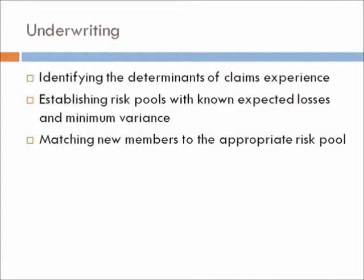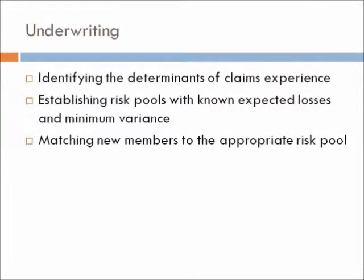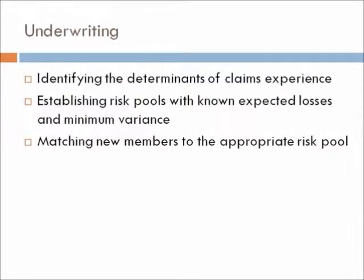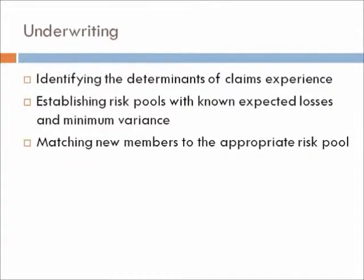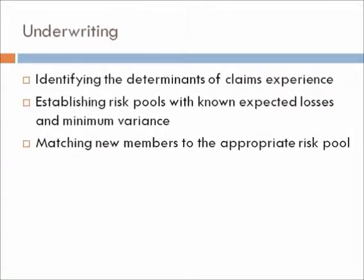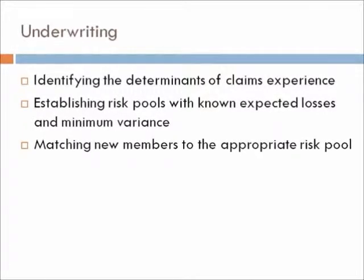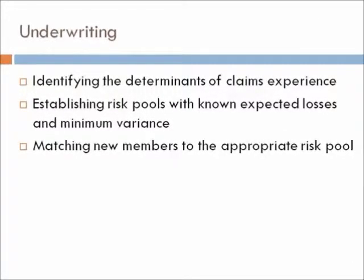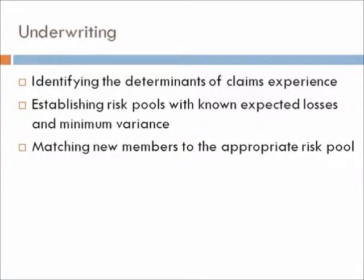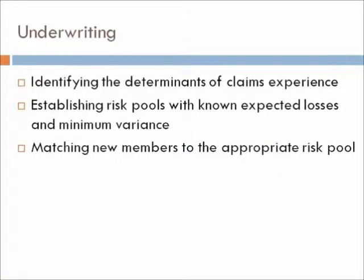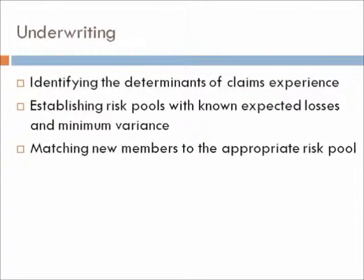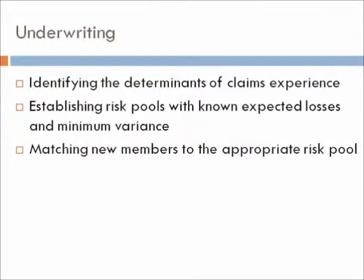What is underwriting? Underwriting is the process by which insurers try to avoid adverse selection — a selection of high-risk people in the pool. They want to include both high-risk and low-risk people, that is, they want to pool the risk among all people.